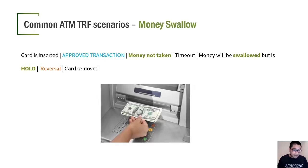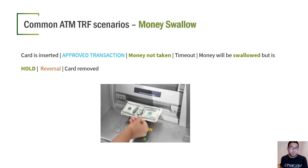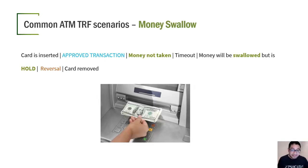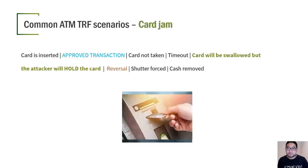The money swallow attack: the card is inserted, a normal transaction happens, and the money is dispensed, but the attacker does not take the money. A timer triggers and the dispenser attempts to retract the money. At the moment the money is being retracted, the attacker forces and grabs the cash, causing a reversal to happen. The attacker gets both the money and the card.